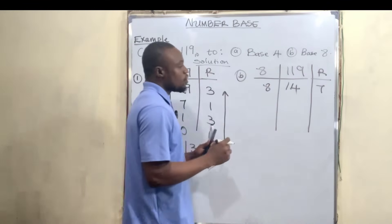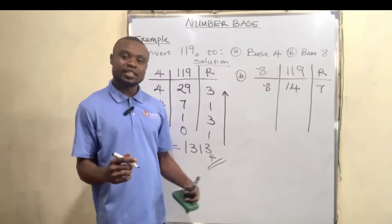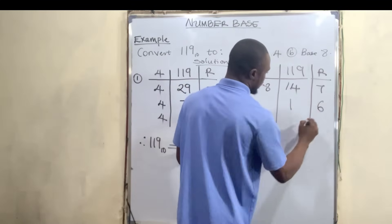Also, 14 divided by 8 is 1 remainder 6. So we have 1 here and we have a remainder of 6.